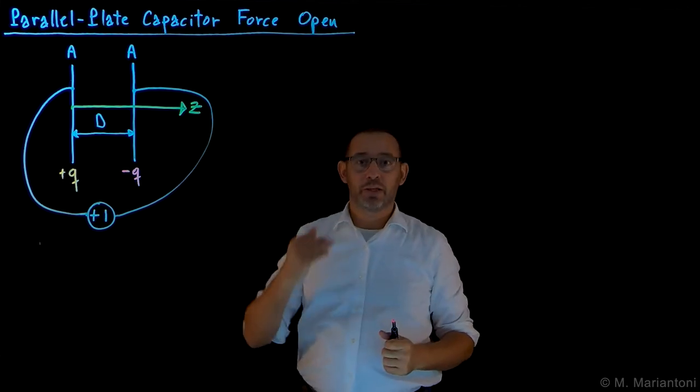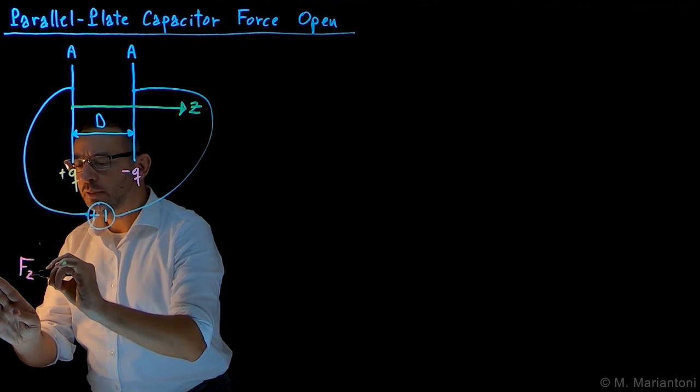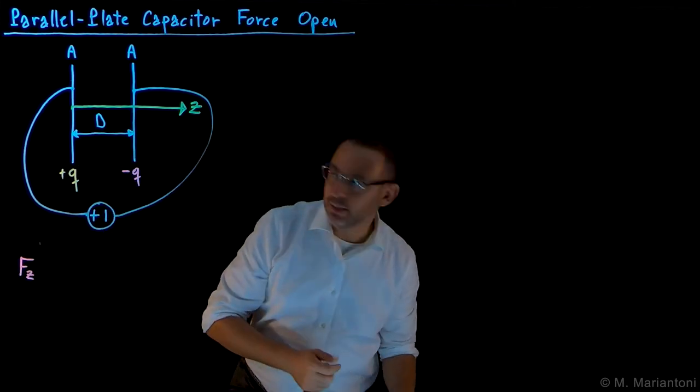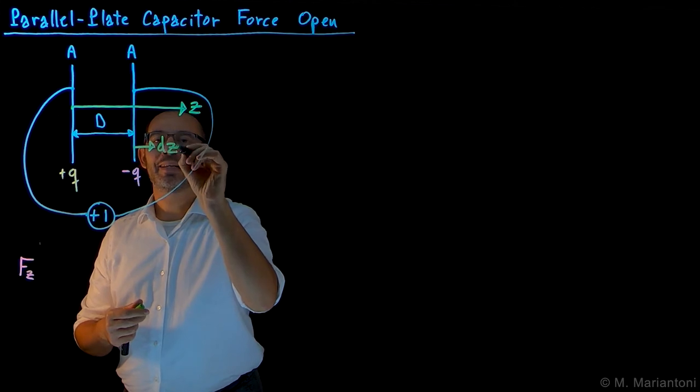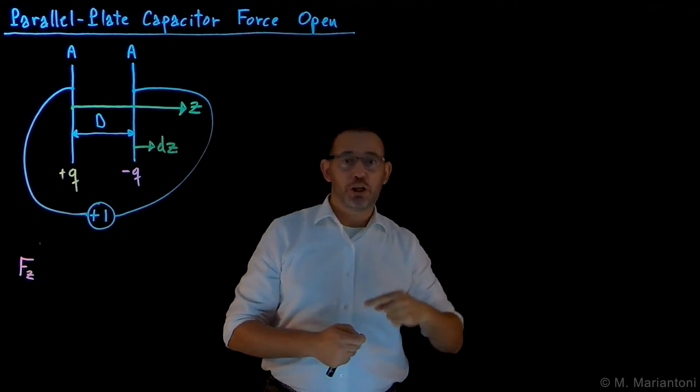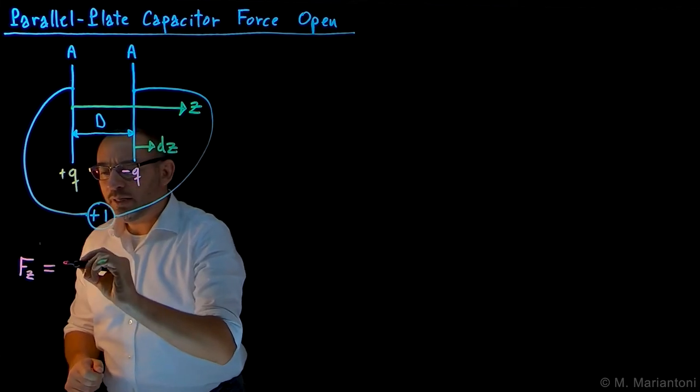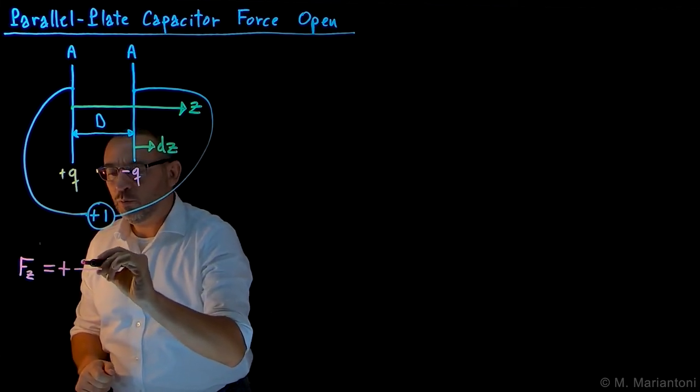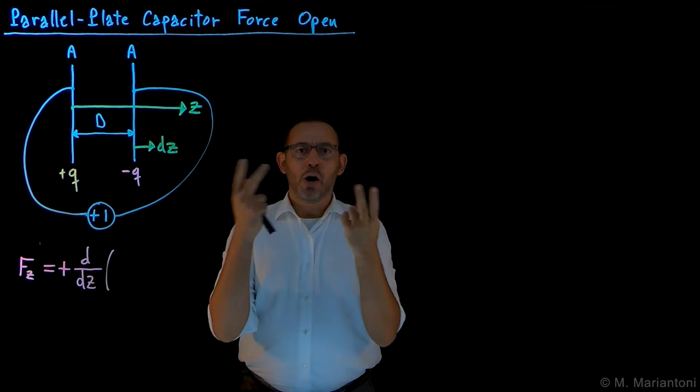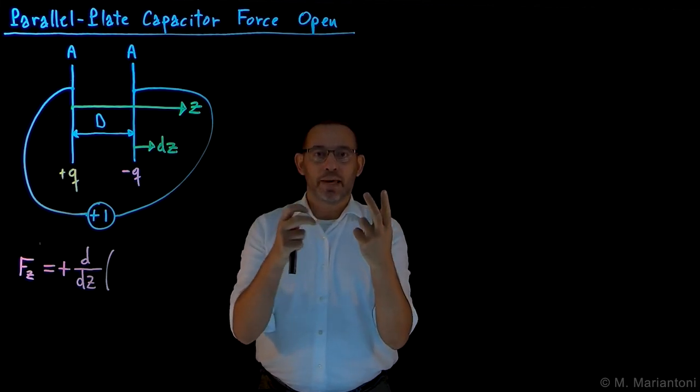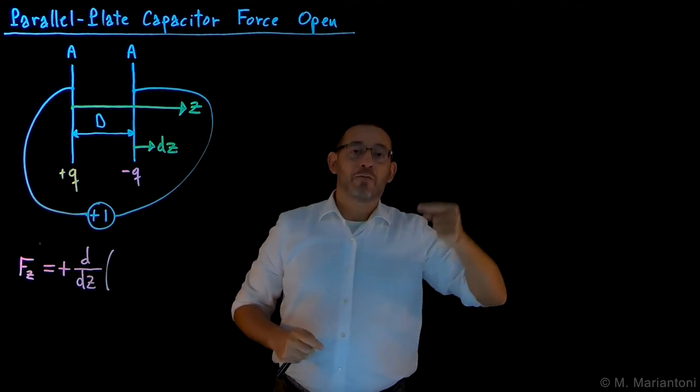We want to compute in these open conditions the force, which can only be along the Z axis, F_z magnitude, between these two plates upon displacing one of the two plates by quantity dZ to the right, which will correspond to a change in capacitance. However, in this case, we are considering an open system. So the result is plus the derivative with respect to Z. Pause the video and think: among the two possible electrostatic energies for this capacitor, which one would you use in the open system? Q squared over 2C or one half C delta V squared?